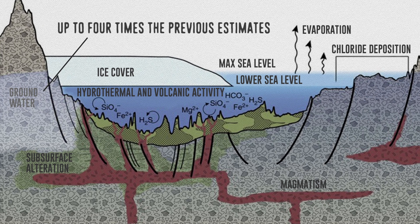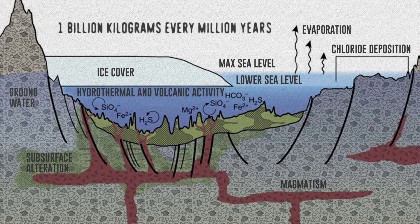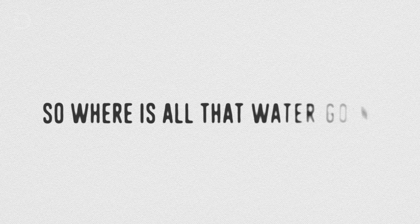If applying these findings to subduction zones around the world, the amount of water being pulled into Earth's interior through subduction zones is equal to three billion teragrams every million years. So where is all that water going?